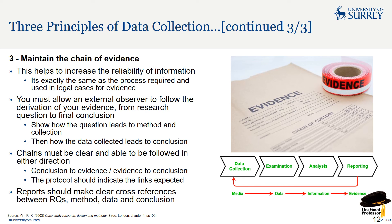Maintaining your chain of evidence is super important because it makes the reliability of your information greater — the same process is required in legal cases. You've got to allow an external observer to follow the derivation of your evidence from research question to final conclusion, showing how the question leads to the method, then the data collection, and then how the data leads to the conclusion. Chains must be clear and followable in either direction. Reports should make clear cross-references between research questions, method, data, and conclusions.